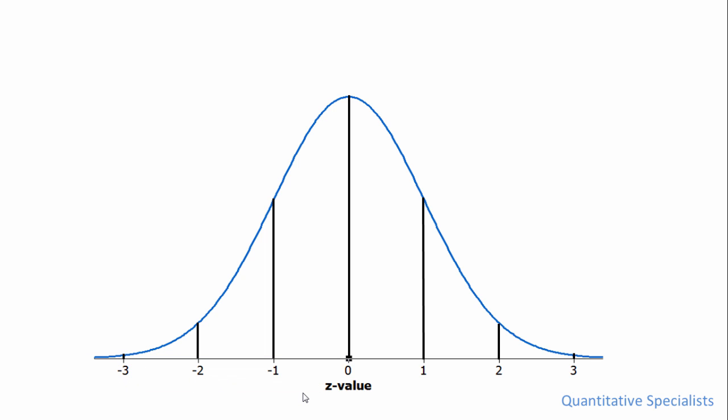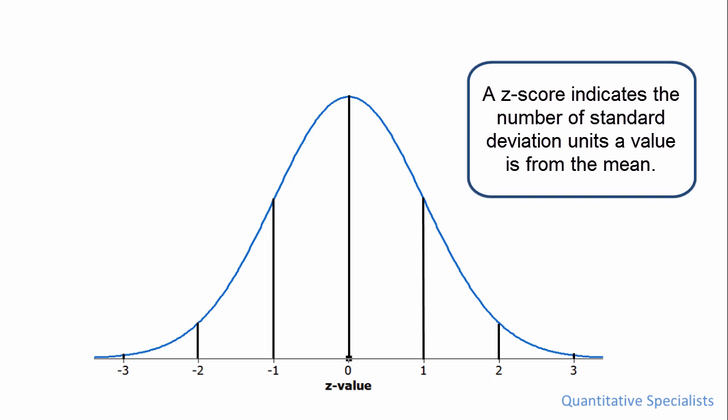Now it's helpful to know that in a z-score distribution, each z-score indicates the number of standard deviation units a value is from the mean.